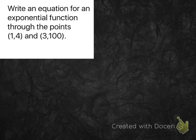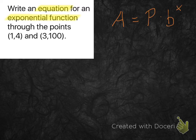So now, we're going to do a difficult example here, where we're going to try to write an equation for an exponential function through these two points: 1, 4 and 3, 100. So let's try to dissect what all this stuff means. We're looking for an equation of an exponential function. What does an exponential function look like? Well, that's what we just talked about. It has this form.